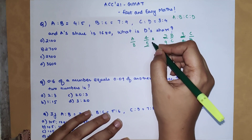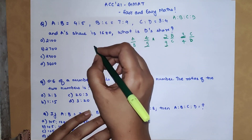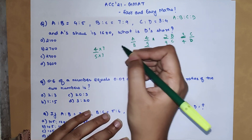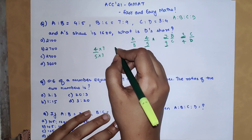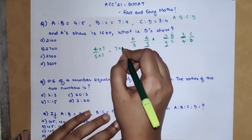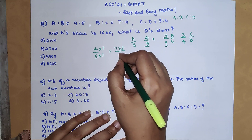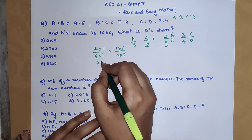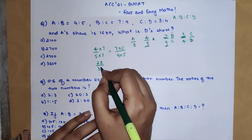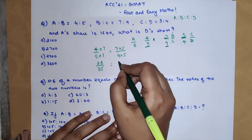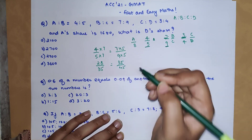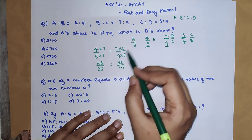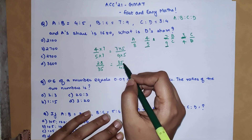When you multiply a fraction, you have to multiply both the numerator and the denominator to keep it balanced. So 4 upon 5 multiplied by 7 over 7 gives 28 upon 35, and 7 upon 9 multiplied by 5 over 5 gives 35 upon 45. Now B is represented by 35 in both fractions.